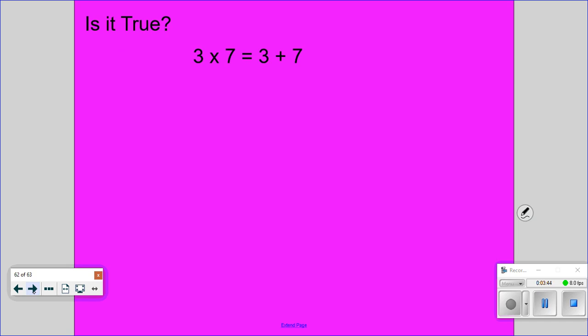Alright, this time I want you to determine if this is true. 3 times 7 is equal to 3 plus 7. Make two different tiles with your array to show what one side is equal to versus the other side. So with your counters, let's go ahead and start with 3 times 7, and then show using your counters what 3 plus 7 is going to equal.